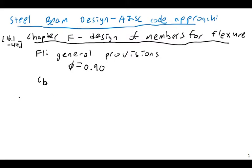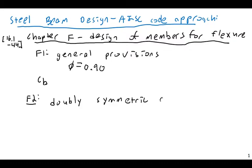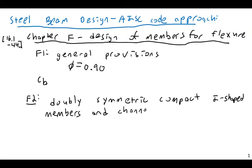Where I want to focus our efforts today is Section F2. The code states that F2 applies to doubly symmetric, compact, I-shaped members and channels bent about their major axis — the strong axis bending we discussed previously. So we're talking about major axis (XX axis) bending in this chapter.